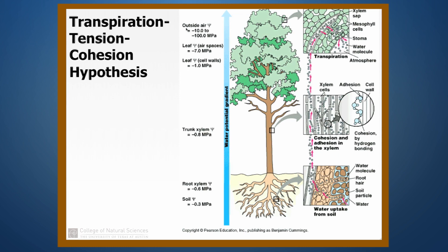So air, depending on how humid it is, usually has a negative pressure potential of somewhere between negative 10 and negative 100 MPa, so very strong negative pressure potentials. Now if we go from that outside air inside of a leaf here, we can see that leaves can have up to negative 7 MPa pressure potentials inside of them.